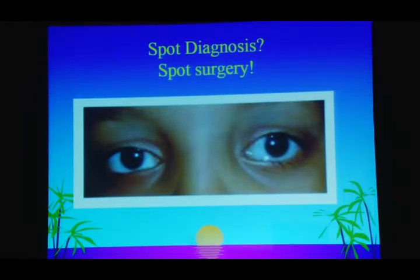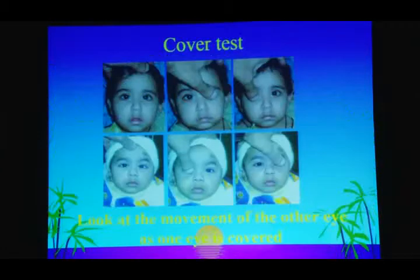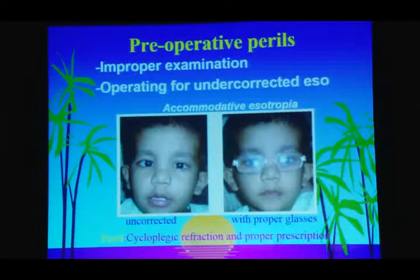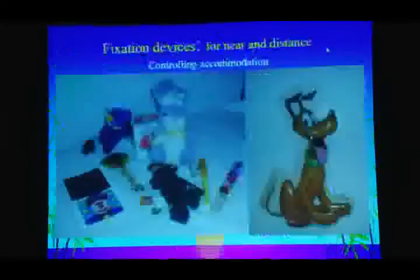Spot diagnosis and spot surgery is not something to be done in strabismus surgery. There can be apparent squints which are misleading, and you do not have to operate for pseudo, eso, or exotropias. A simple cover test leads you in. We also have to be aware of refractive errors — an undercorrected eso can land you in trouble if you operate. You need proper cycloplegic correction and glasses.